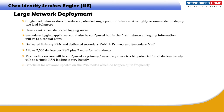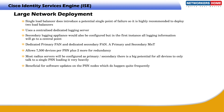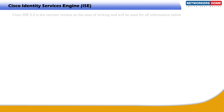This is also very beneficial for software updates on the PSN nodes, which happen quite frequently. For a software update, you just take a single PSN node out of the cluster and perform the upgrade. All administration is handled on the primary PAN, and in the event of a failure it would move over to the secondary, which contains a replicated database. Cisco ISE 2.2 is the current version at the time of writing.